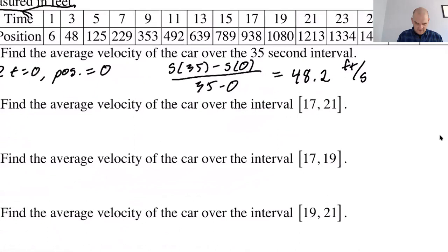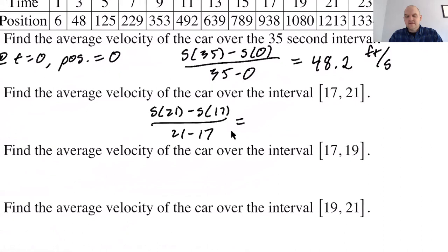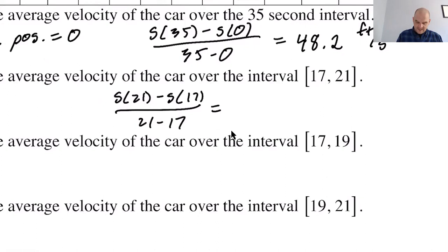Average velocity from 17 to 21 is s(21) minus s(17) over 21 minus 17. That's 1213 minus 938 divided by 4, which gives 68.75 feet per second.